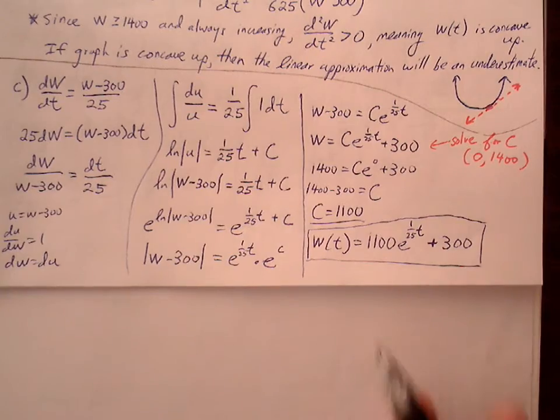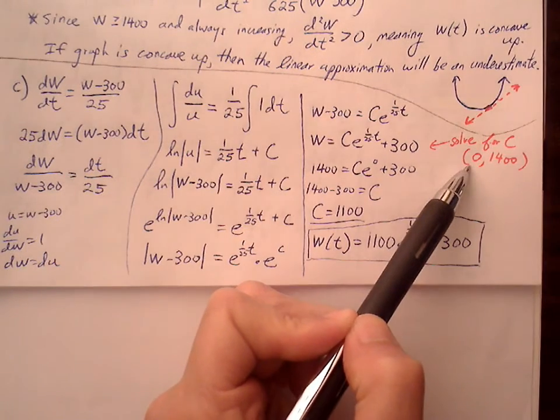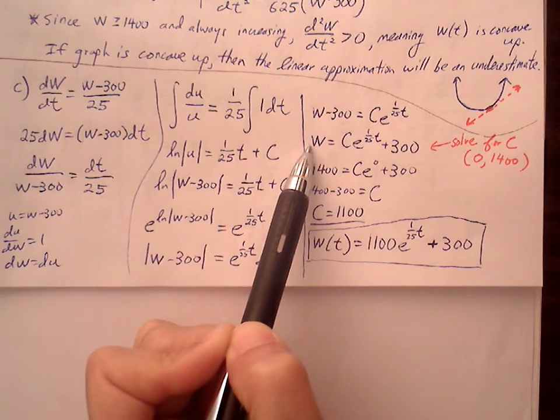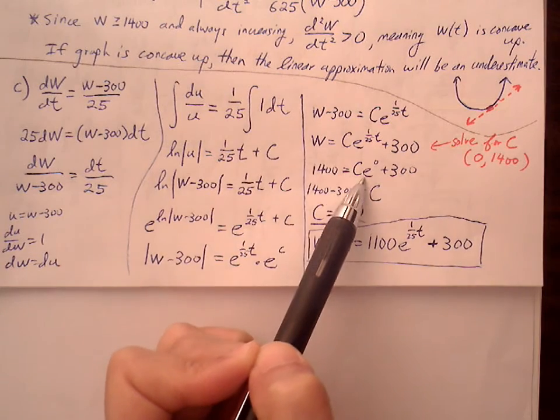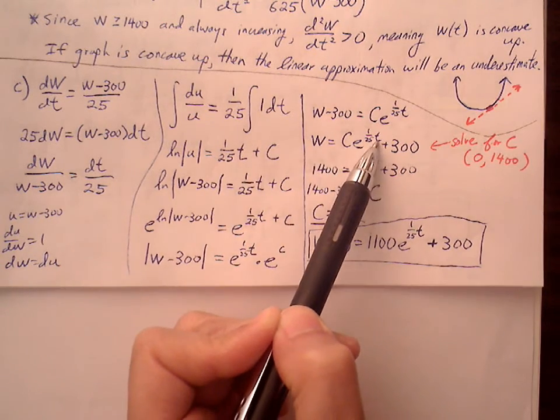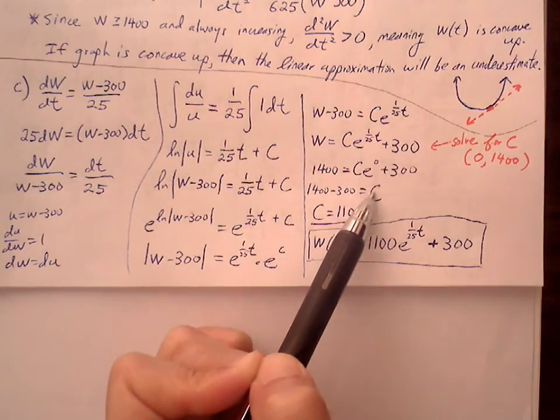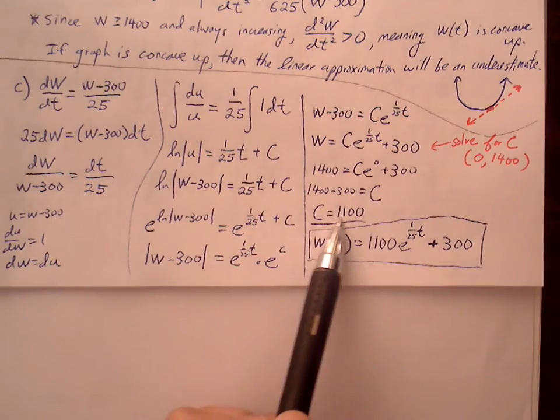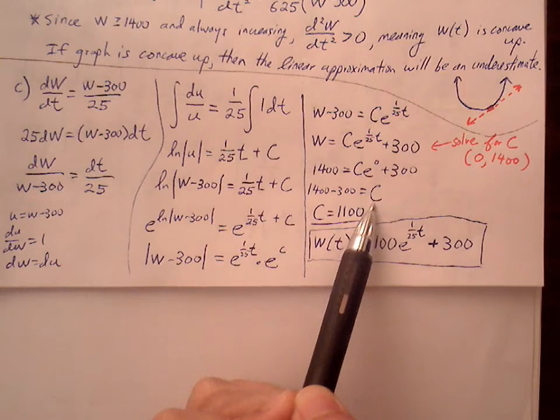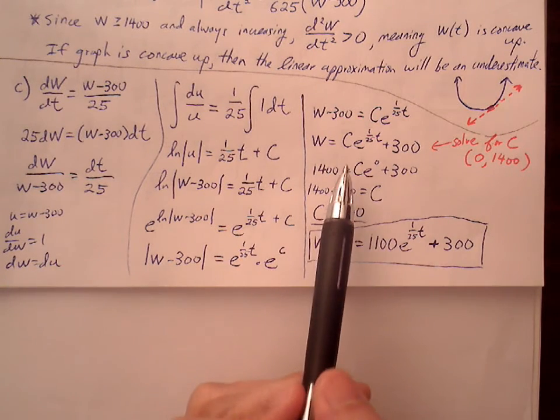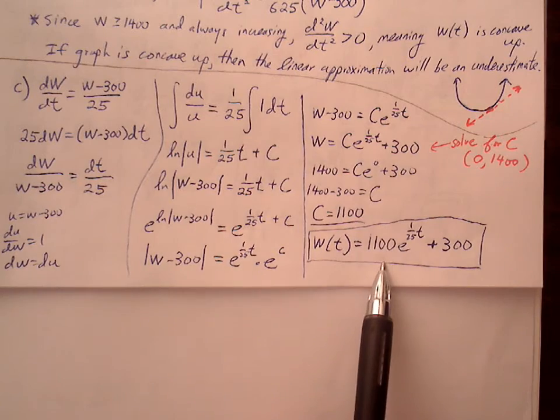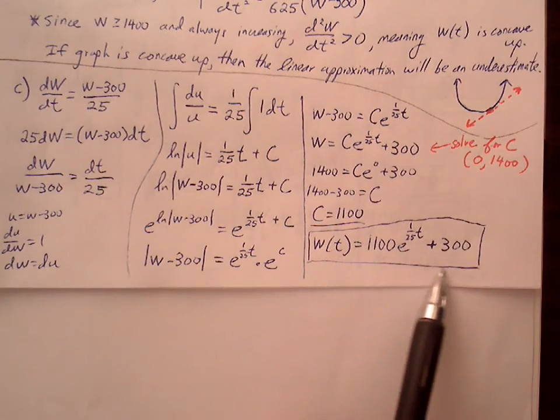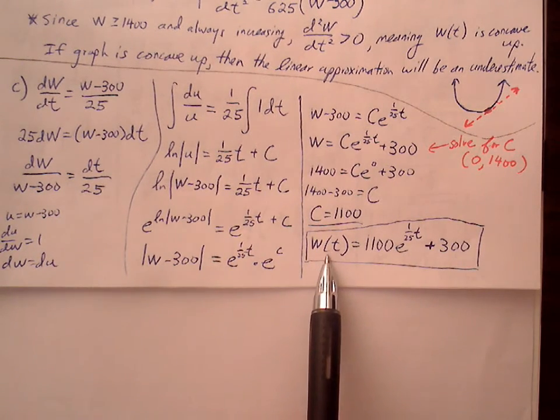So I'm now ready to solve for C. I'll go ahead and plug 0 in for t, 1400 in for W, and see if we can get C by itself. Let's see if we can solve for C. So 1400 is equal to Ce^0. 1/25 times 0 is going to be 0. e^0 is just going to be 1. So I get C plus 300 equals 1400. Subtract 300 from both sides. We get C equals 1100. I have my C value found. So we can now convert our general equation to a specific equation. Specific solution. Replace C with 1100. So here's my specific equation that represents W(t), which will tell us the waste at any time in years.